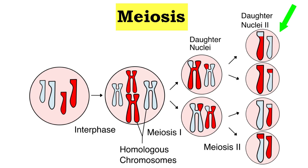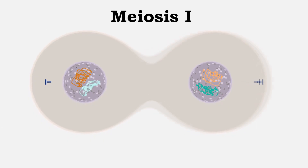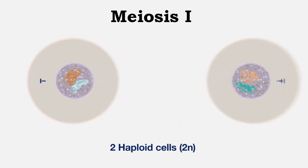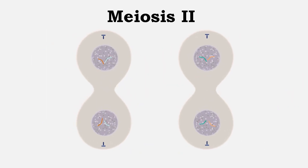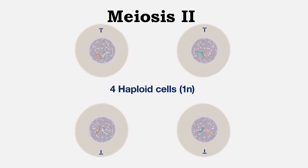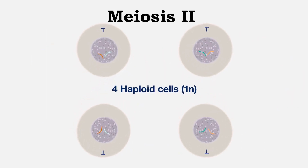This means that daughter cells can only have half the amount of chromosomes as their parent cells. What's interesting is that these cells actually divide twice, which means there are four daughter cells that are not identical, and these daughter cells also only have half the amount of chromosomes as their parent cell.